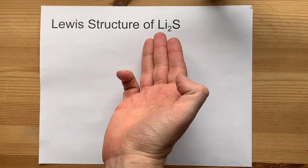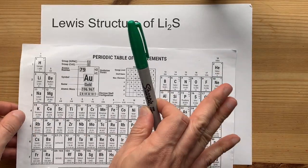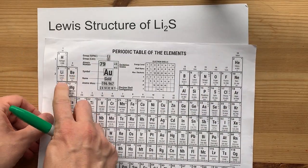The Lewis structure of lithium sulfide, Li2S, is going to be an ionic structure because lithium is a metal.